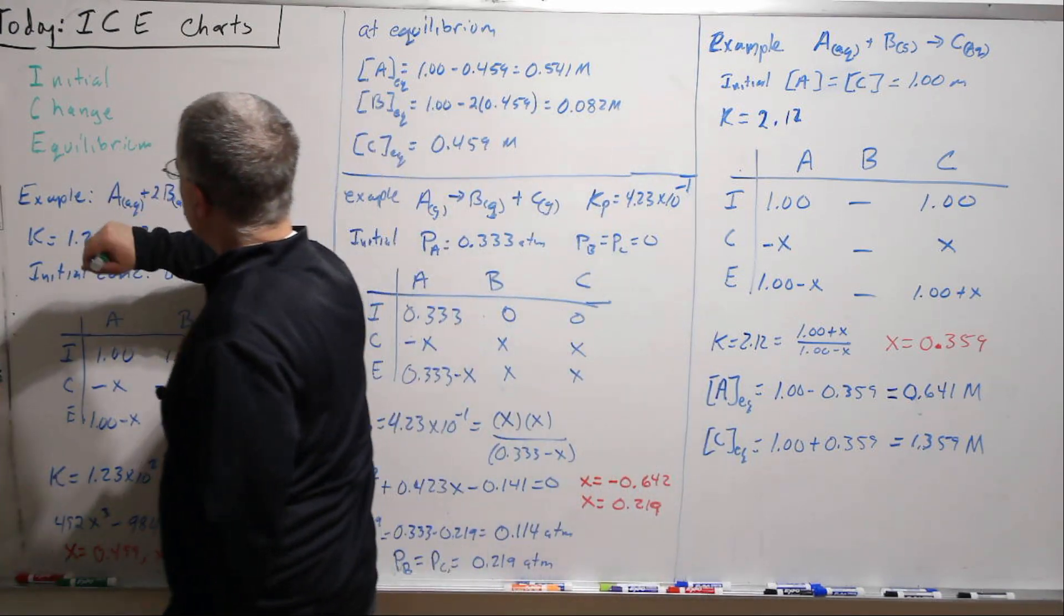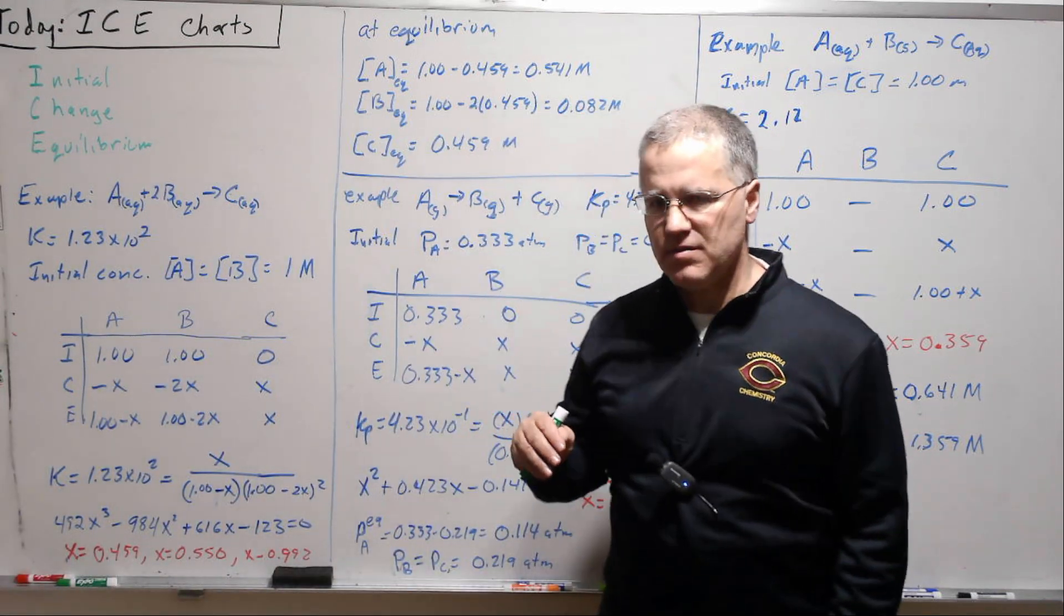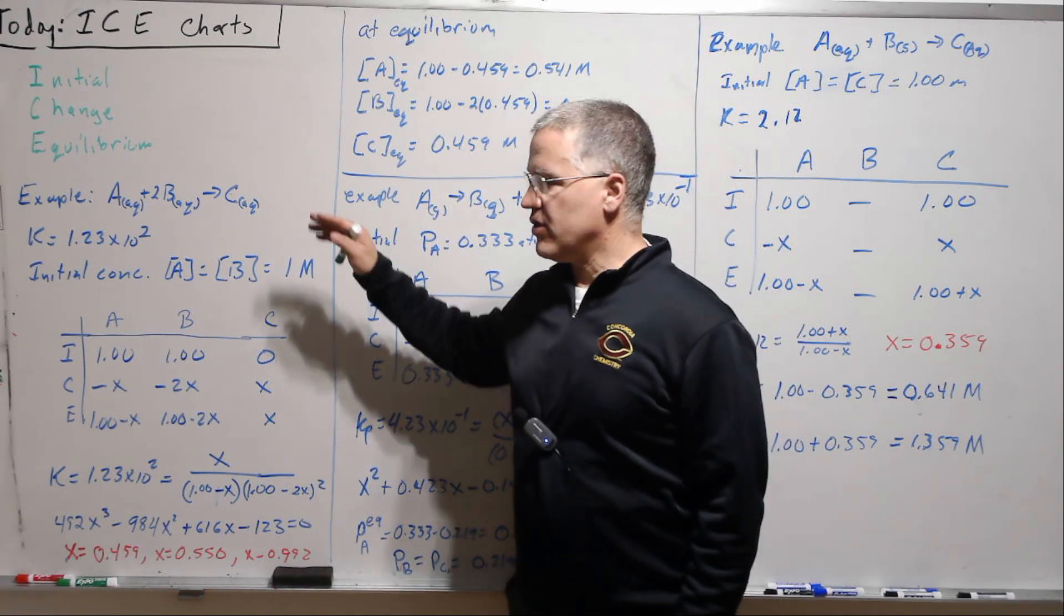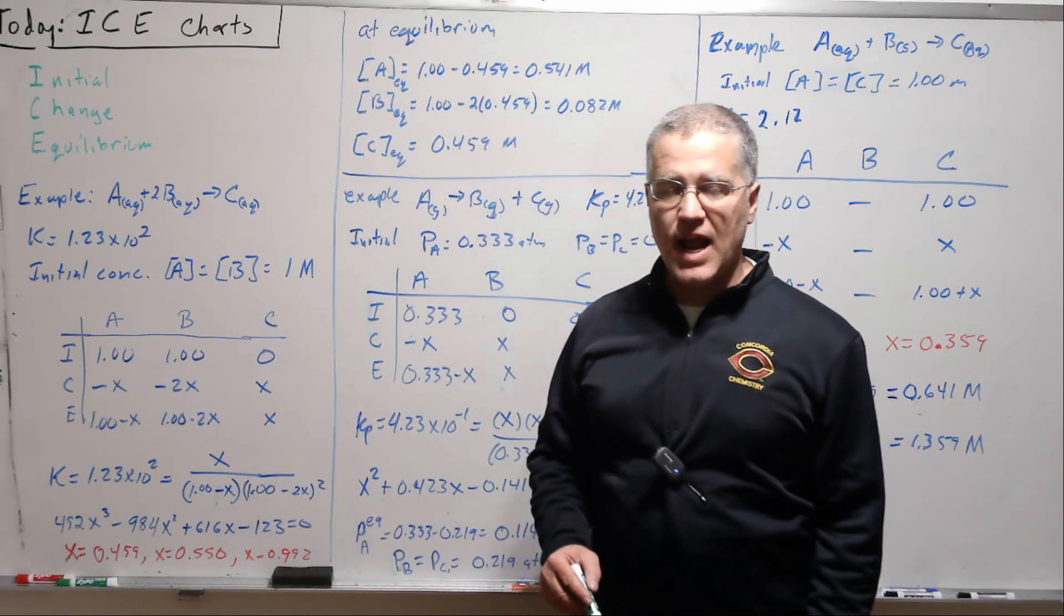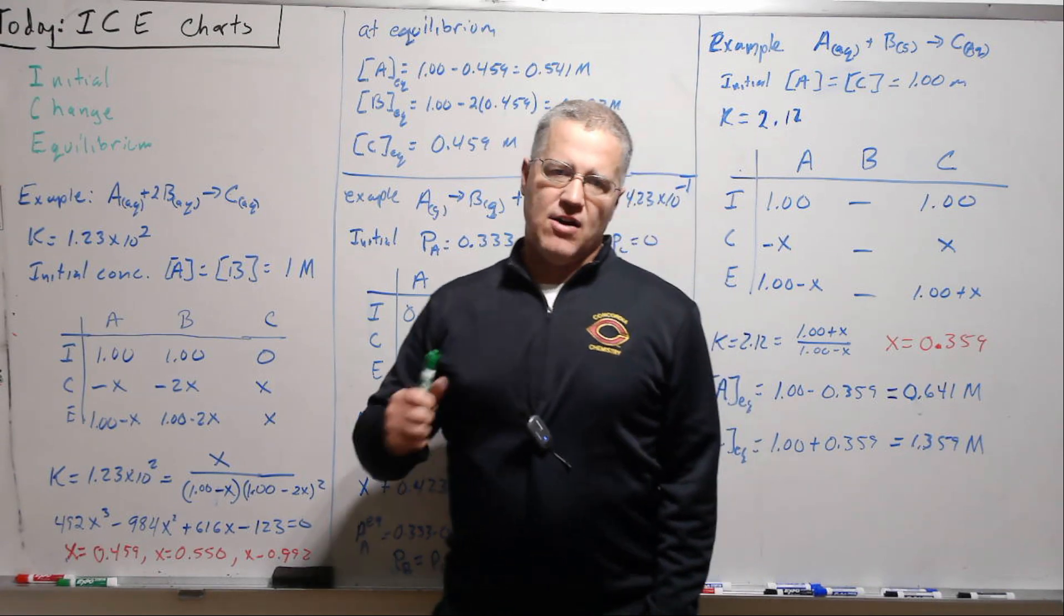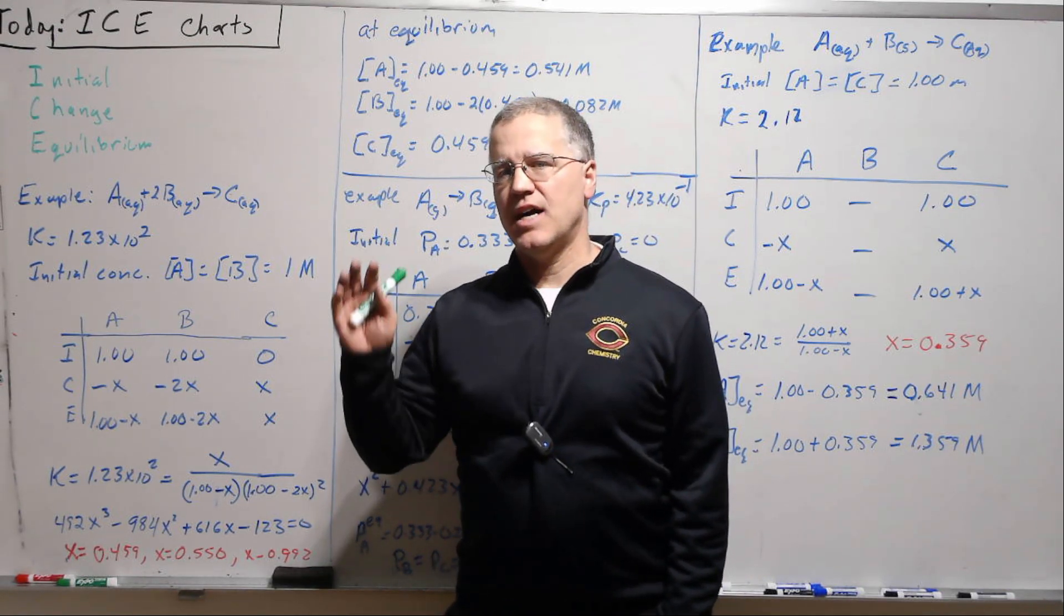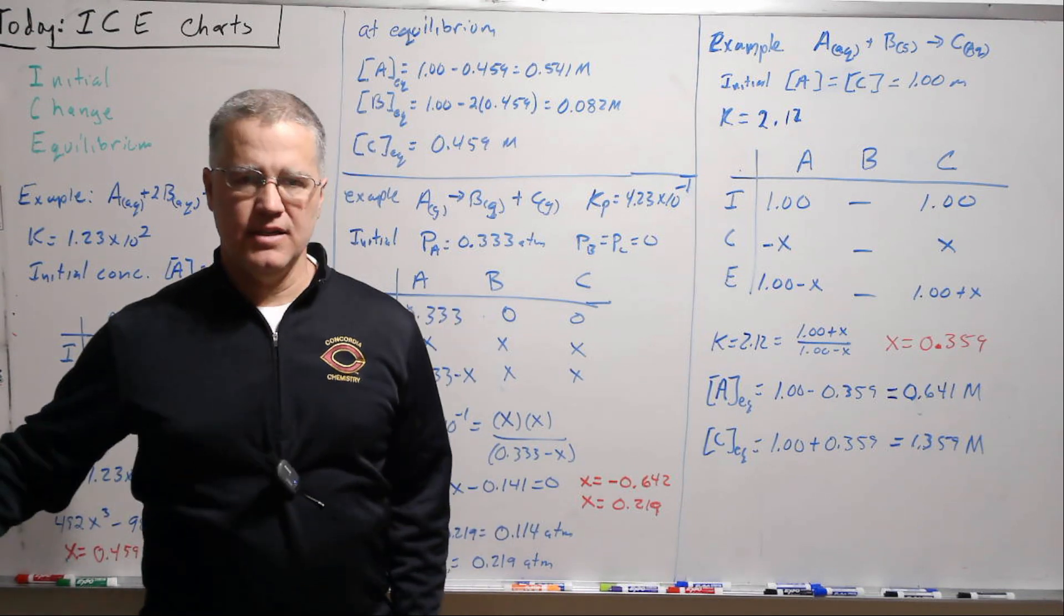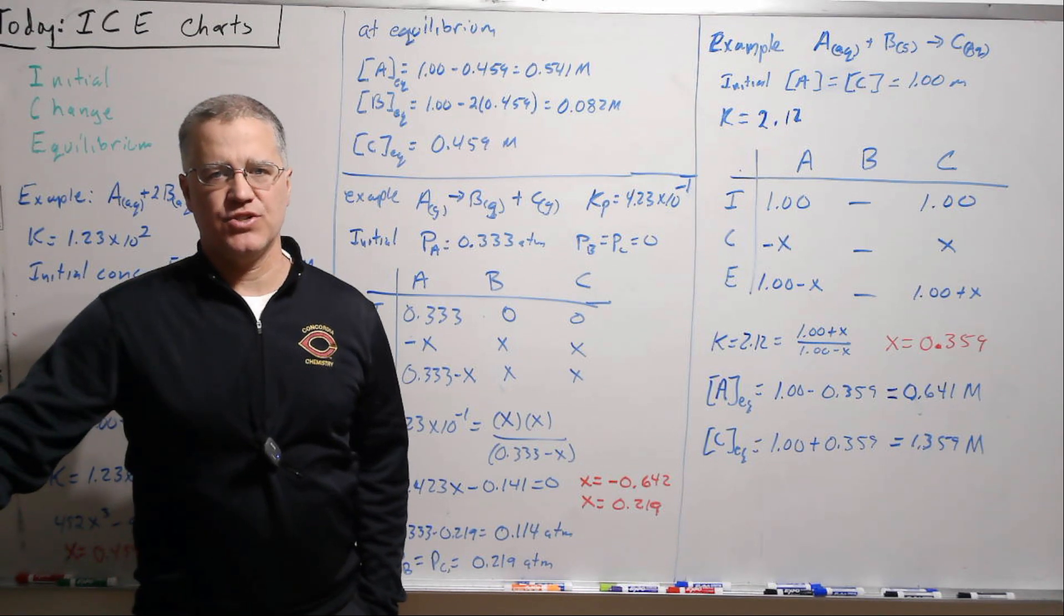So that's sort of the central question of an equilibrium problem. And so these ICE charts stand for initial, change, and equilibrium. So we write down the initial amounts, we let an unknown variable X represent the change, and then we use the stoichiometry of the reaction to relate those changes to one another, and then we subtract the initial from the change to give us the equilibrium amount. Now I think the only way to understand this is to do some. So I'm going to go through three examples here, and then again I really encourage you to pound away on many examples in your book.